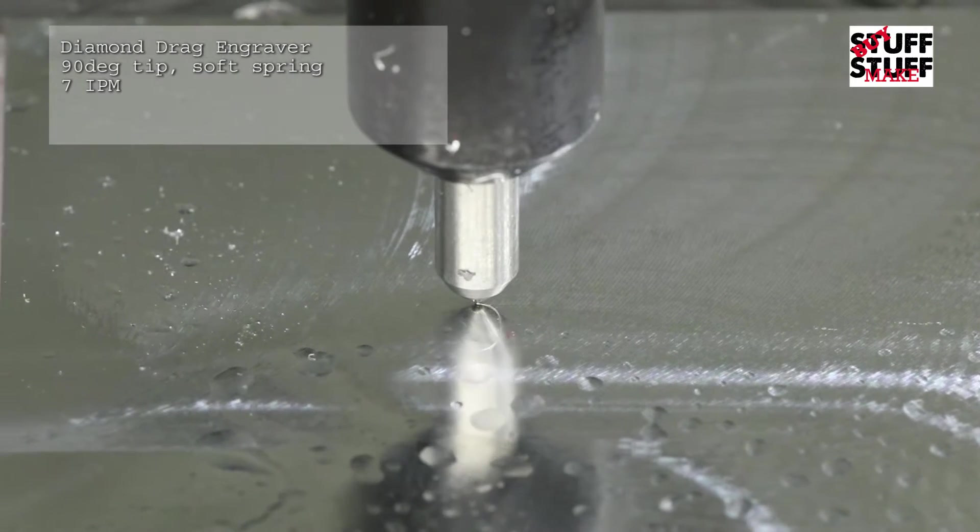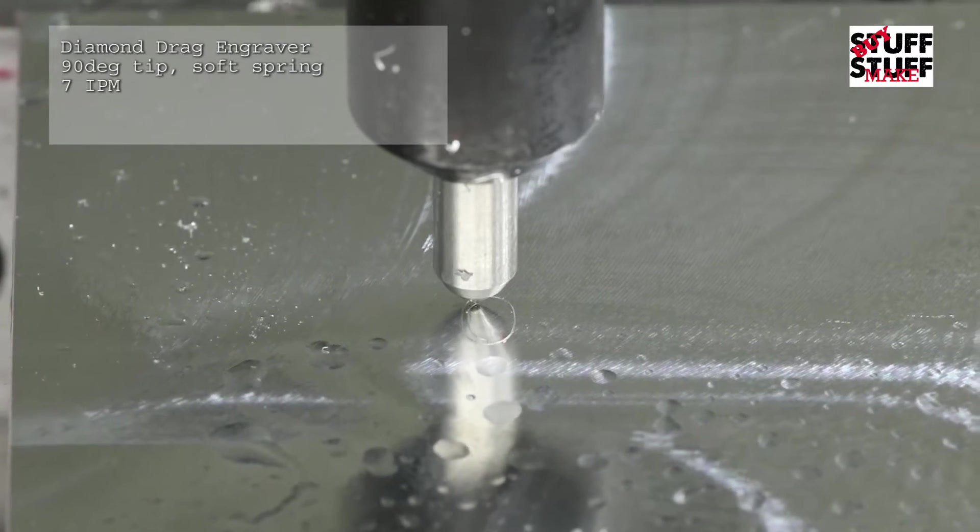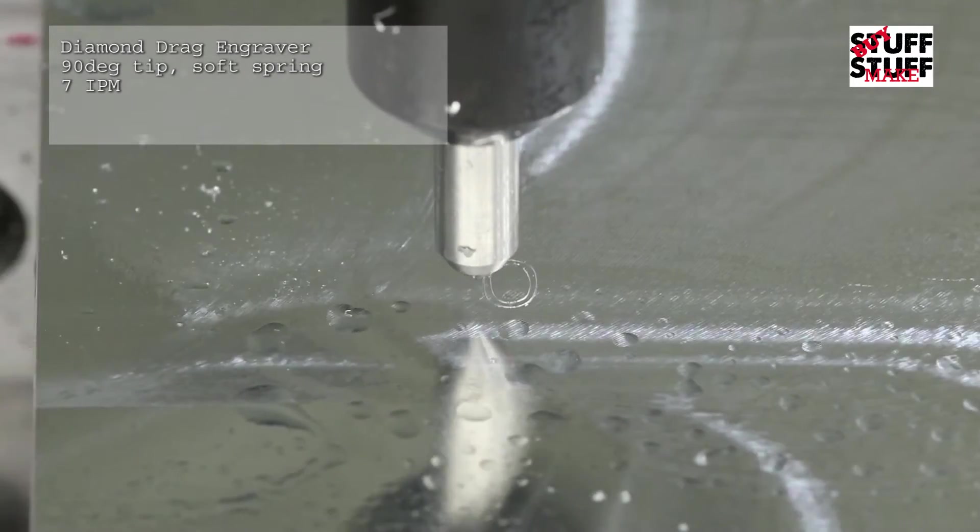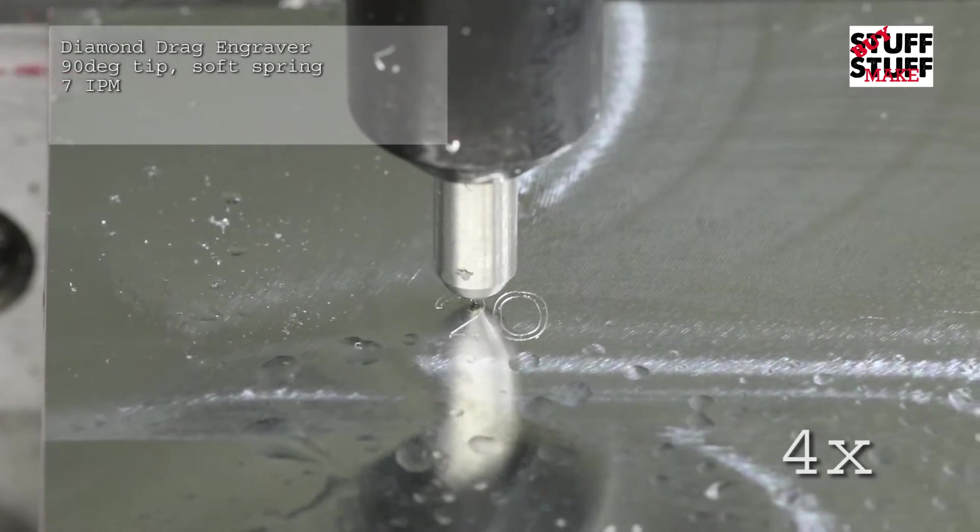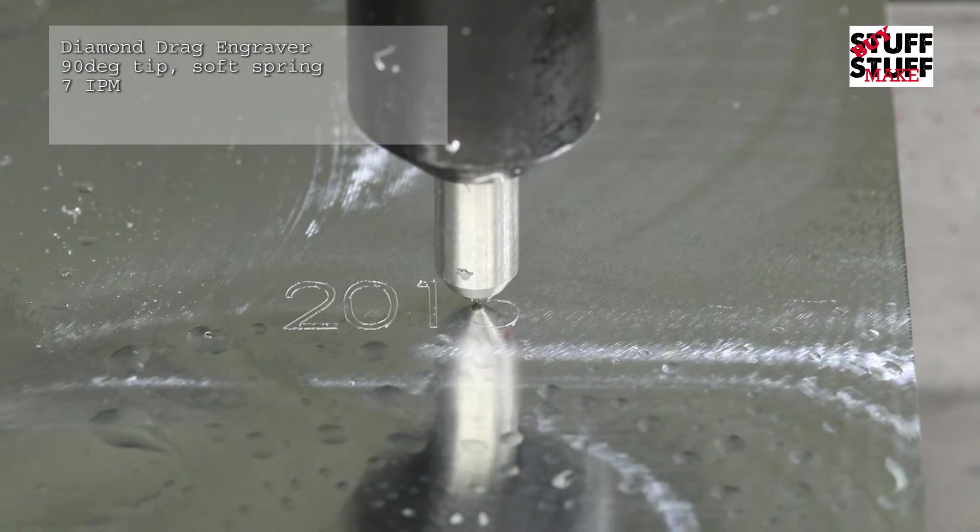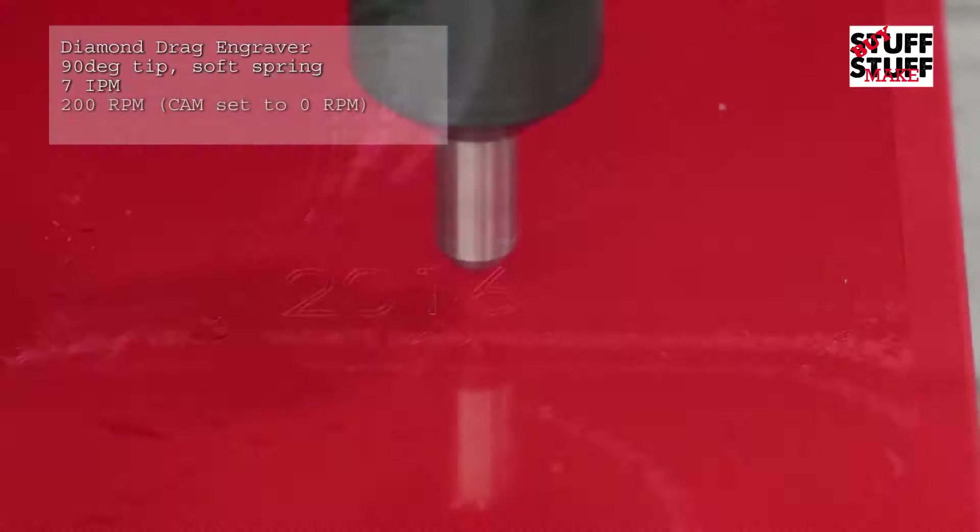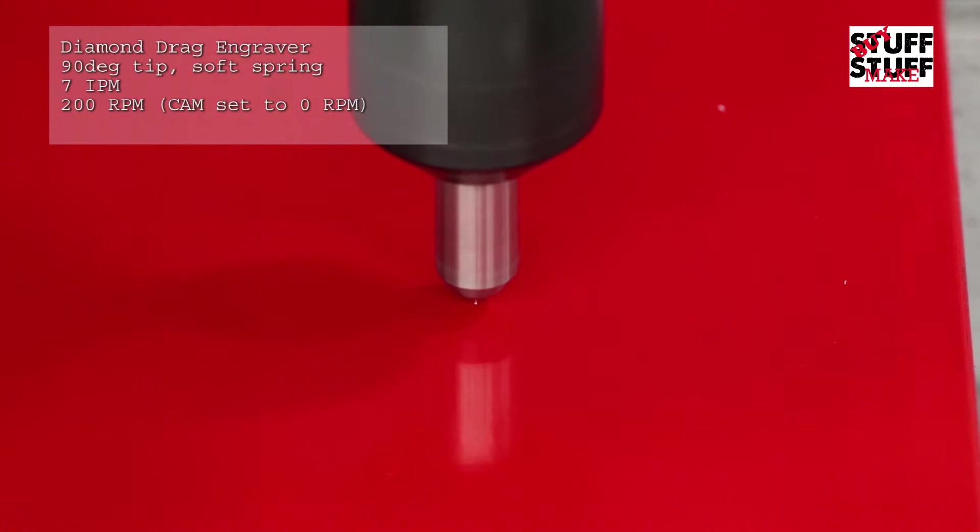We're using the diamond drag engraver, the one that Tormach offers. Had a little trouble in Sprutcam trying to figure out exactly how to get this to work. I was watching Tormach's latest video where they do a holiday engraving and downloaded the files there, and I got some ideas on how to make that better.